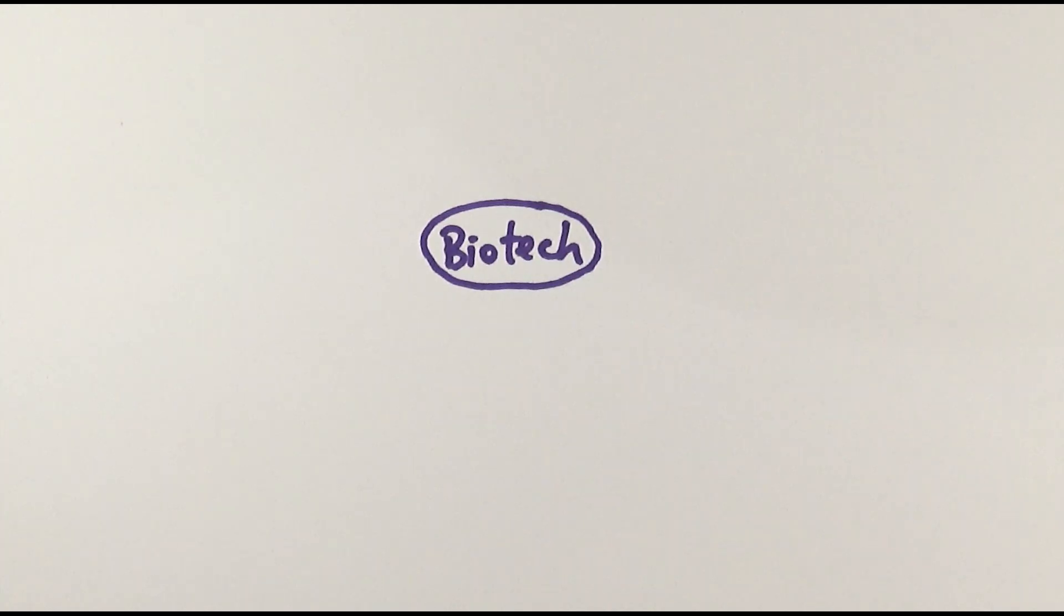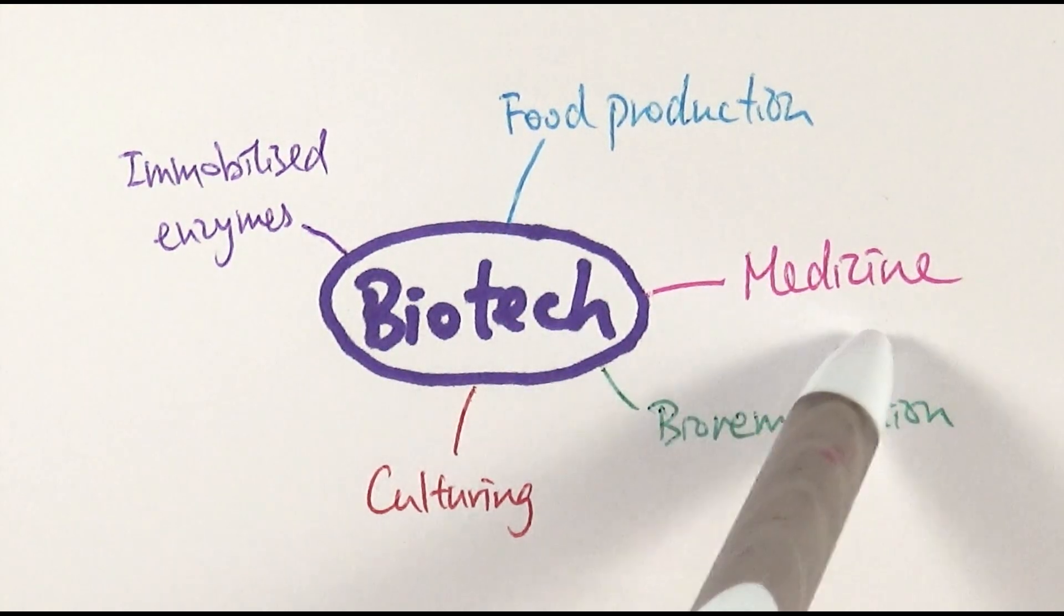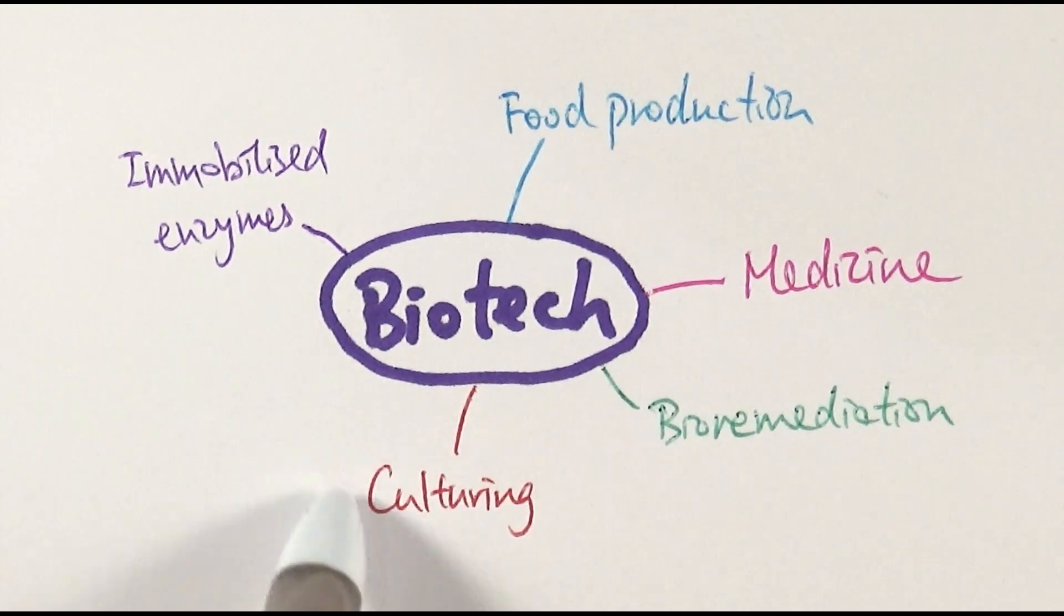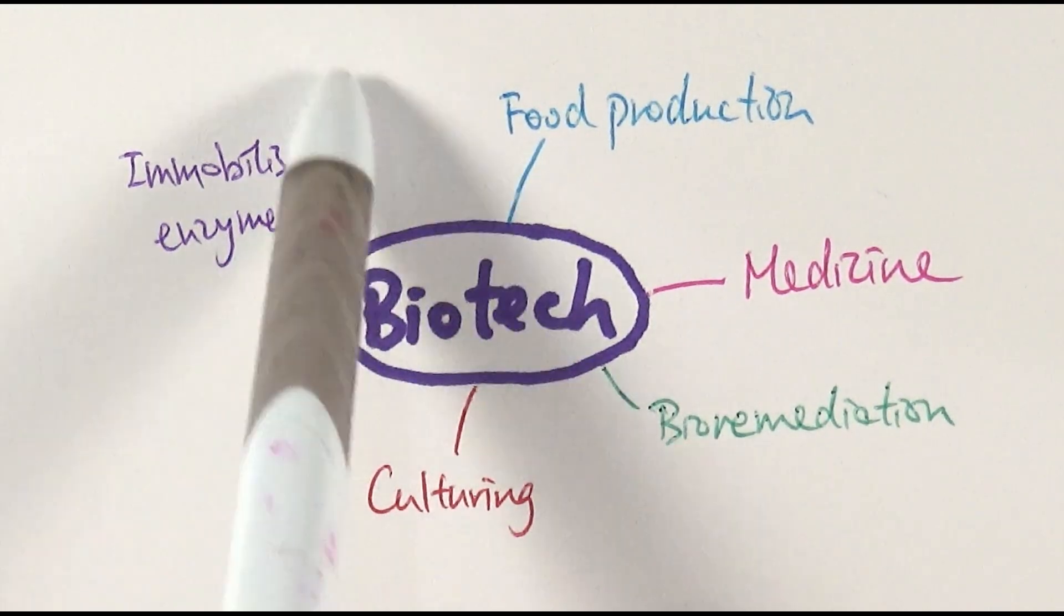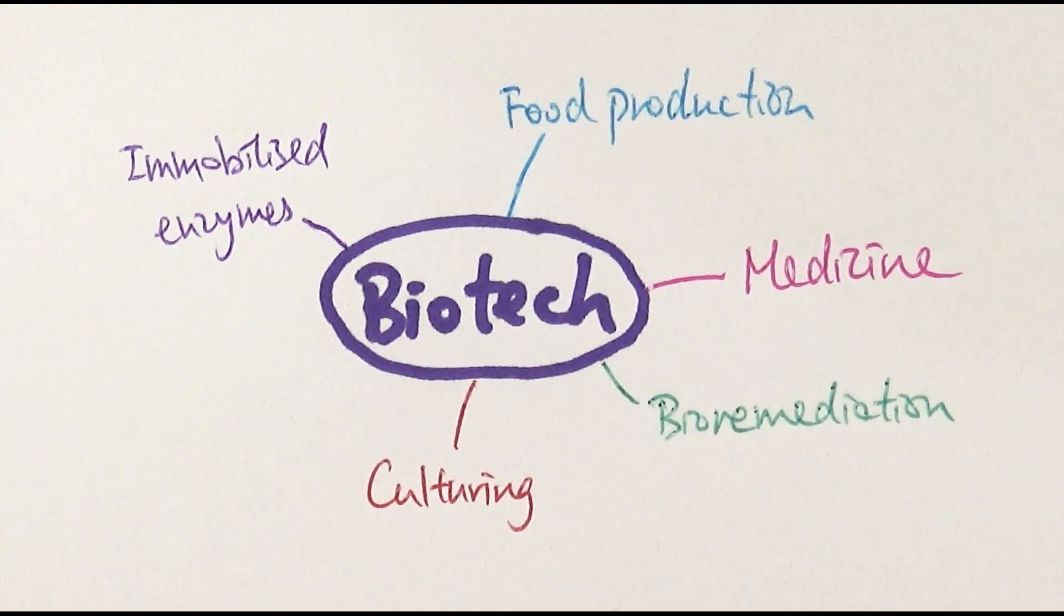The next bit I'm going to talk about will be biotechnology. Having looked through the whole chapter, I largely put them into five different categories, but you need to know these five categories at different levels of detail. Number one, we'll talk about food production, then medicine and bioremediation. Then there's a massive part about culturing, and finally immobilized enzymes, which seems like a bit of a standalone.